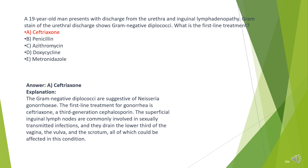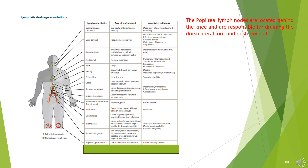The answer is A. Ceftriaxone. The gram-negative diplococci are suggestive of Neisseria gonorrhea. The first-line treatment for gonorrhea is ceftriaxone, a third-generation cephalosporin. The superficial inguinal lymph nodes are commonly involved in sexually transmitted infections, and they drain the lower third of the vagina, the vulva, and the scrotum.